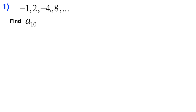We need to look at this sequence to determine whether it's arithmetic or geometric. We can determine that by checking if there's a common difference. Between negative 1 and 2 there's a difference of 3, and between 2 and negative 4 there's a difference of 6, so that doesn't work — it's not an arithmetic sequence.